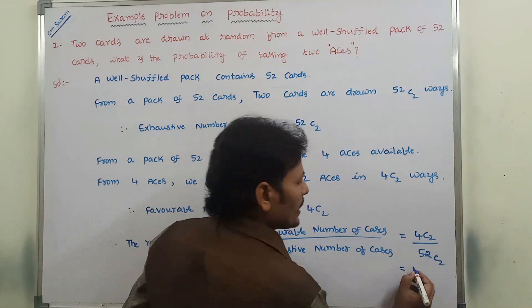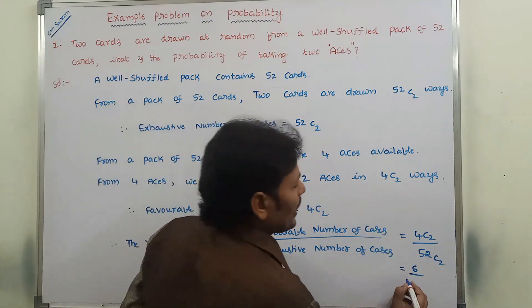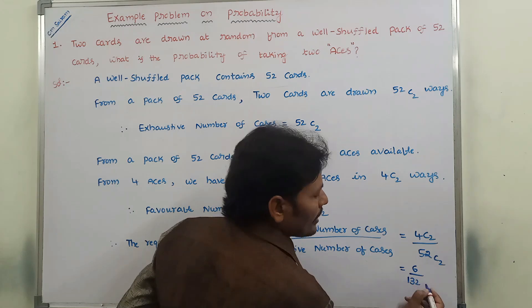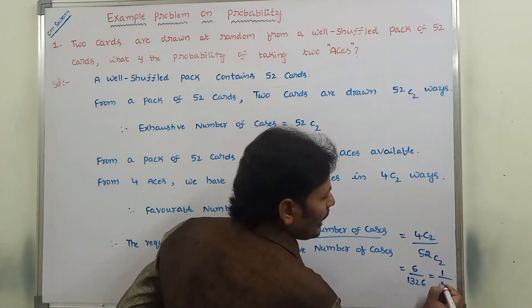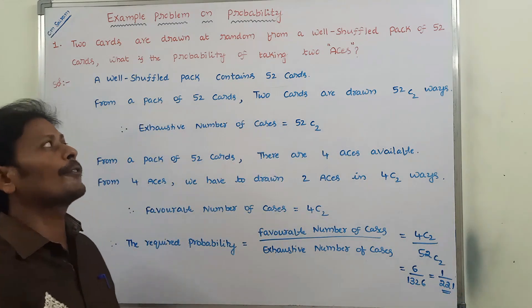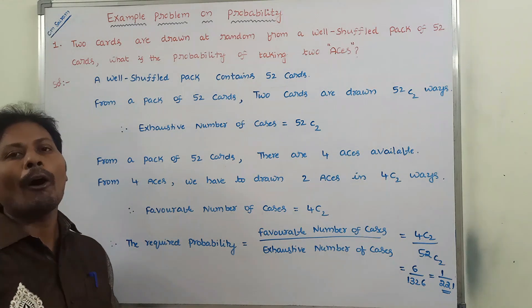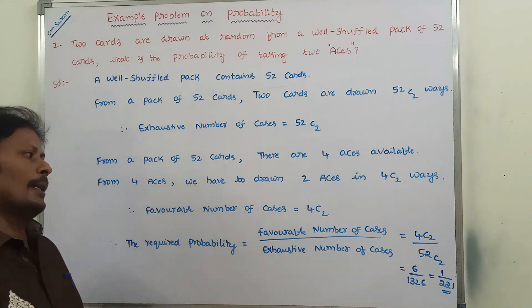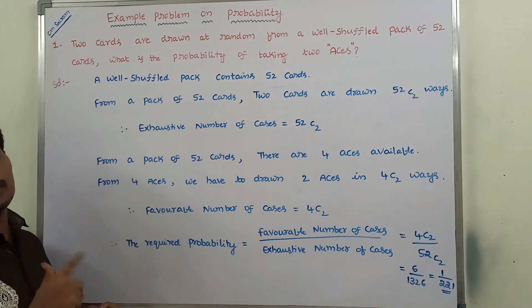4 C 2 value is 6 and 52 C 2 value is 1326. That equals 1 by 221. This is the probability of picking two aces from a pack of 52 cards. In this way, we solve this type of probability problem.